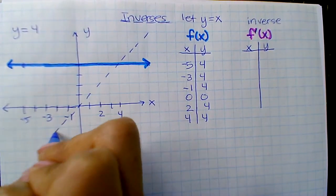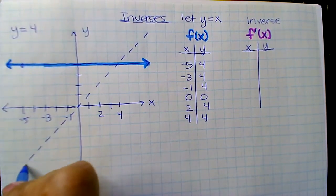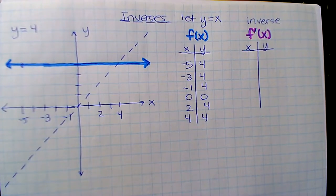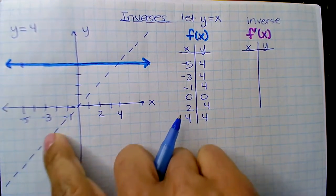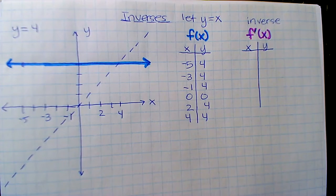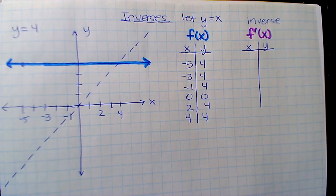So y equals x is actually—and we're going to make it dashed because we don't want to graph the line like it's a legitimate line that we're going to study. This is the line that gives you the inverse function to the original line. That's the substitution of let the y variable become x and let the x variable become y.